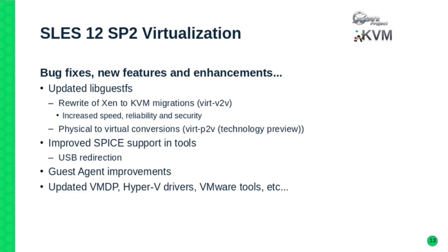Another visible change is improvements in SPICE, including USB redirection. If you're running QEMU remotely or running virt-manager remotely, you can plug in a local USB stick and it will automatically be passed through to the guest — as long as that guest is in focus. There are significant improvements in ease of use for USB pass-through. The guest agent has also been improved, allowing better communication with the guest, including ensuring the file system is properly frozen or thawed during suspend/resume operations.